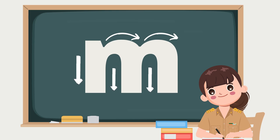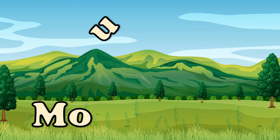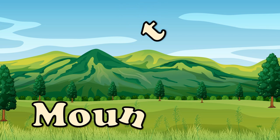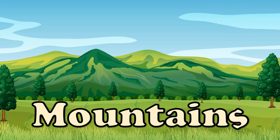M, M for mouse. What picture do you see? That's right! Mountains. Let's spell the word mountains. Mountains: M, O, U, N, T, A, I, N, S. Mountains.